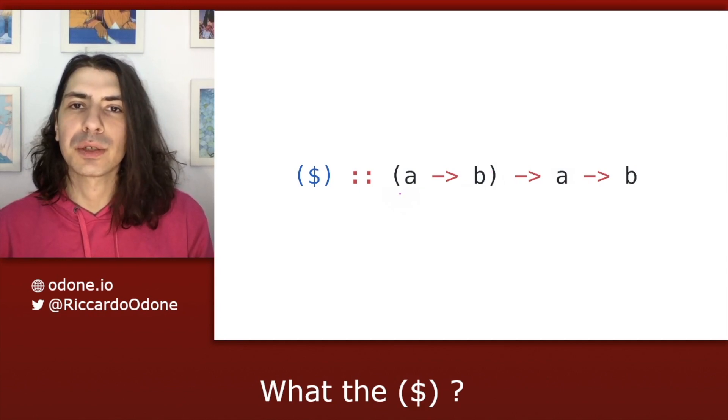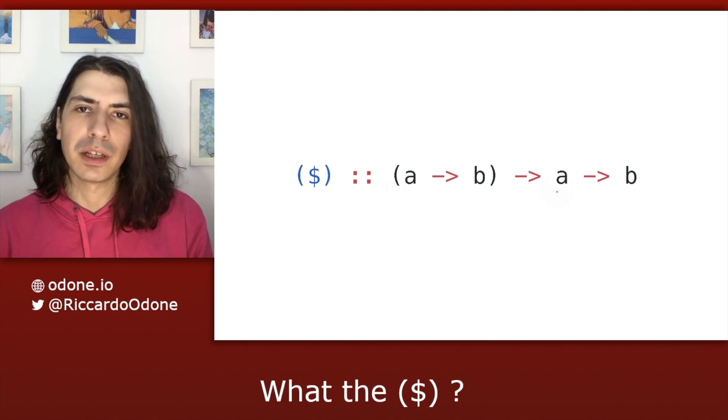The first argument is a function from a value of type A to a value of type B. And the second argument is a value of type A.